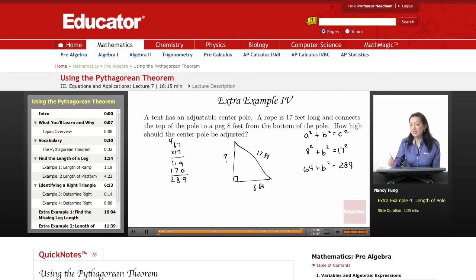Now, to solve for b², we need to isolate b². So we're going to use the inverse operation of adding 64 and subtract 64.